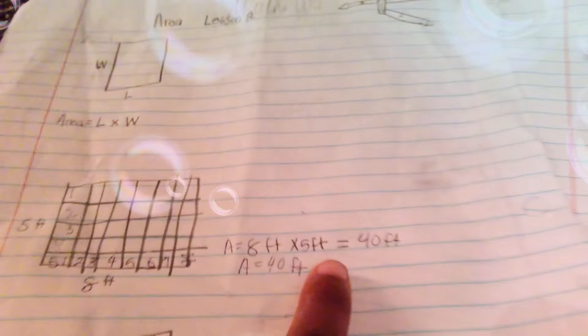And then we basically just multiply. So 8 feet times 5 feet equals 40 feet. The area for this is 40 feet.